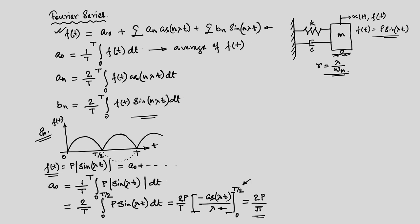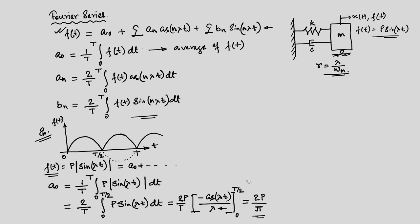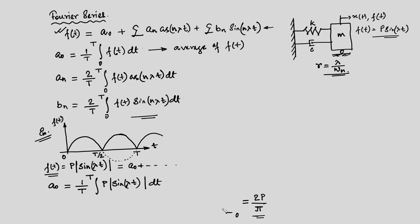Just imagine if there were no modulus — f(t) = p sin(λt) — then from 0 to T/2 we have the positive part and from T/2 to T the negative part, so the average a₀ would be 0. But in our case the function is always positive, giving a finite value. So the first component a₀ = 2p/π.